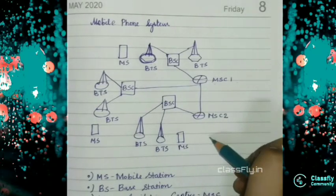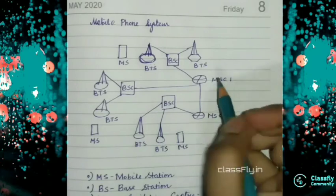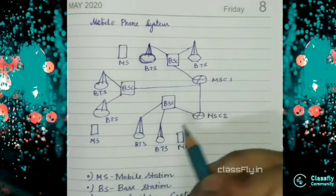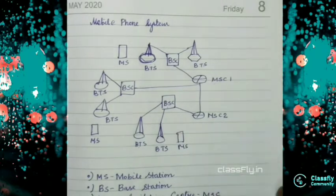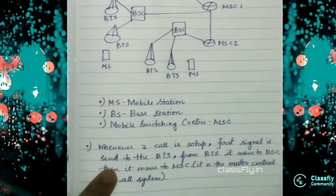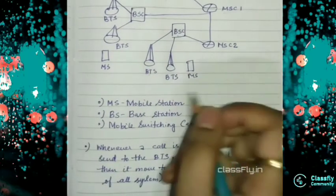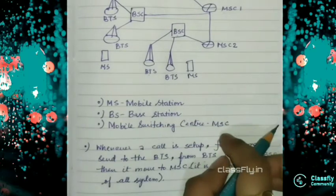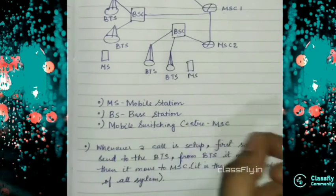That means as we move from MS to BTS, then BTS to BSC, and then we came to MSC 1. But when it moves to another part MSC 2, it moves from MSC to BSC, BSC to BTS and then MS. So MS here is our mobile station. And BS or BTS is our base station. And MSC is our mobile switching center.